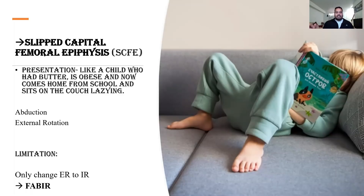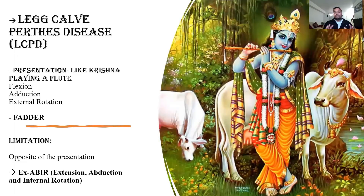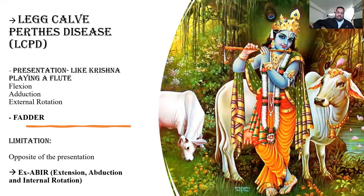To review: when a child is young — between age two to ten — they are dressed like Krishna. The presentation is like Krishna: flexion, adduction, and external rotation, which is the age group for LCPD. The limitation is opposite to the presentation: extension, abduction, and internal rotation.